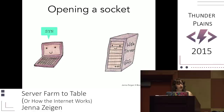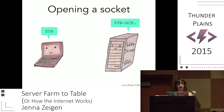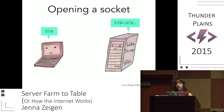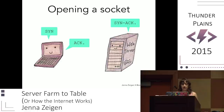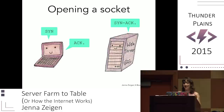What this actually looks like is: the connecting computer sends a SYN packet with a randomly selected sequence number X. Then the computer it's connecting to replies with a SYN-ACK message with an acknowledgment number set to X plus one, and chooses another random sequence number Y. Then the final step is that the client responds with an ACK message with its sequence number set to X plus one and its acknowledgment number set to Y plus one. It's a bit complicated, but it's kind of the basis of the internet.